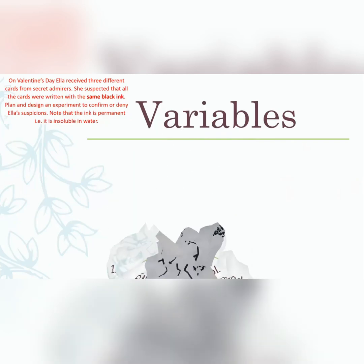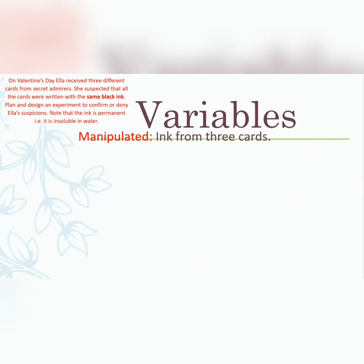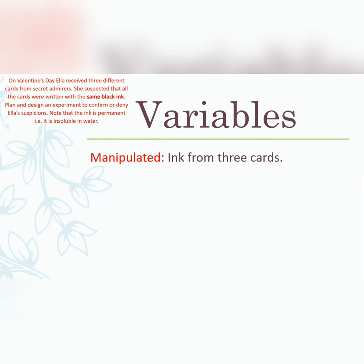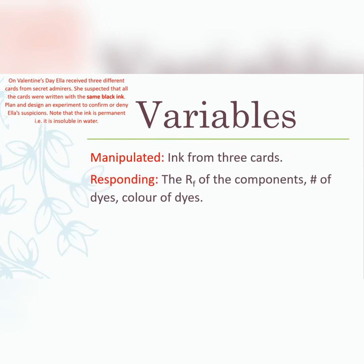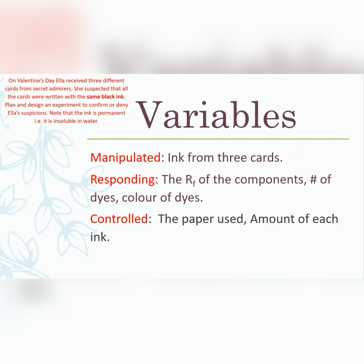For your variables: the manipulated variable is the three inks from the cards. What is affected includes the retention factor of the components, the number of components seen in each marker, and the colors of those components. What we keep constant: we use one strip of chromatography paper for all three inks rather than three separate setups, because using multiple setups introduces too many errors and biases. The amount of each ink used should also be controlled and kept the same.